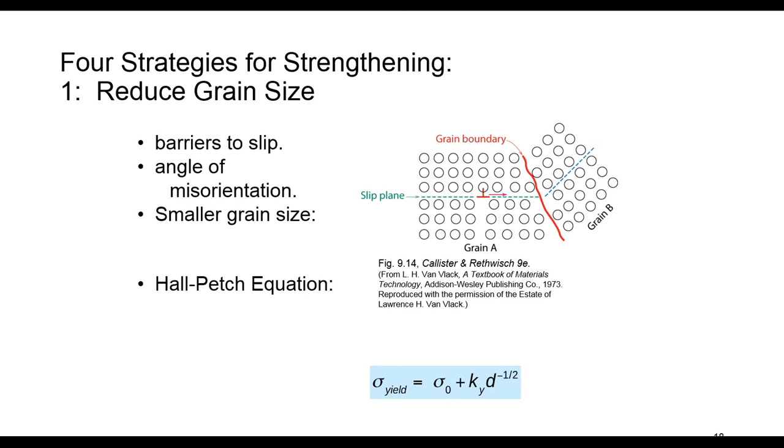The dependency of yield strength on the grain size has been defined by Hall-Petch equation. In this equation that you can see here, D is the average grain diameter. Sigma_0 and K_y are constants for a particular material. Of course, decreasing the size of grain decreases the value of D, and you see the whole term here is going to be increased. Therefore, the yield stress can be increased by decreasing the grain size.